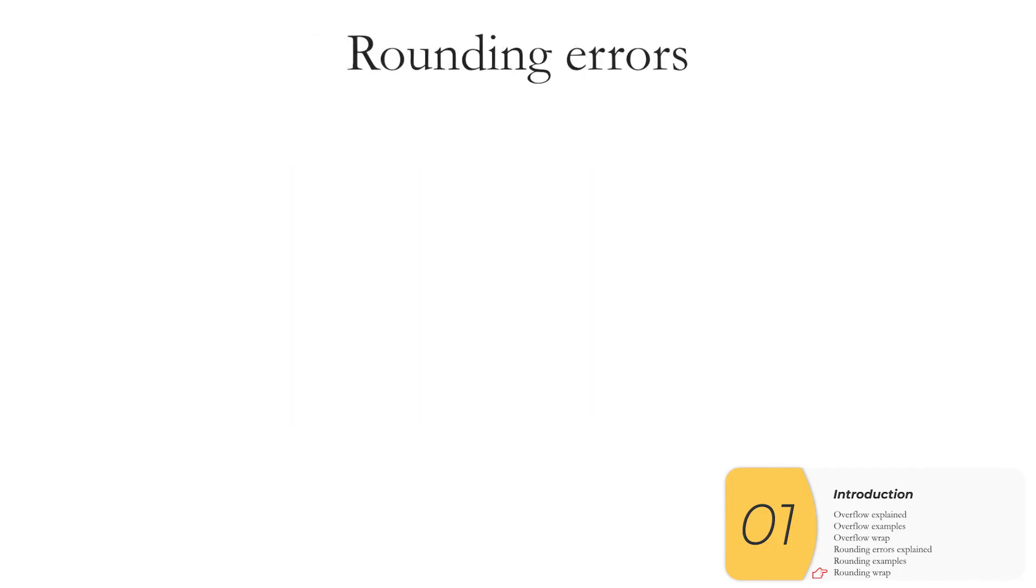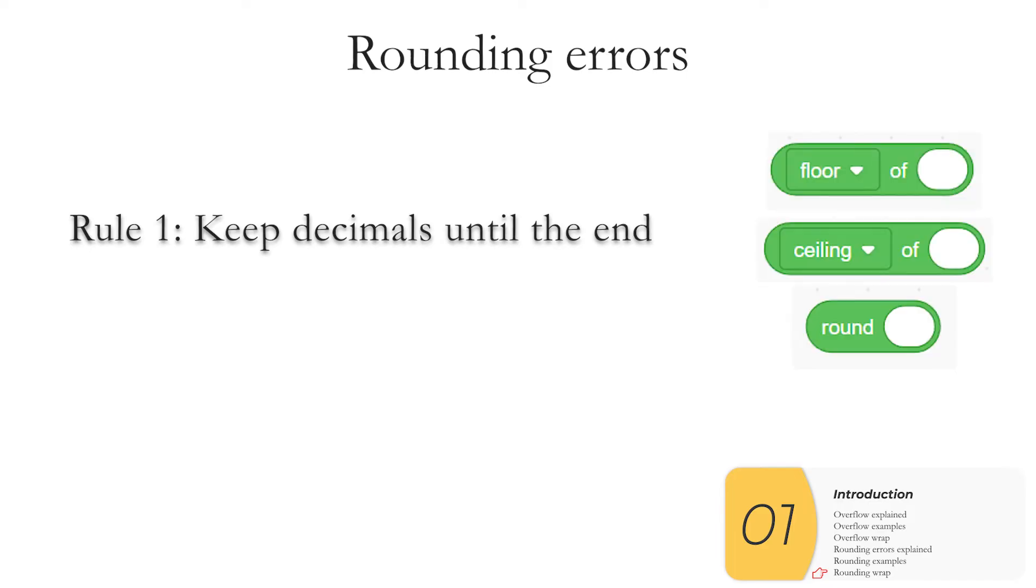Unlike overflow errors, rounding errors are things that will show up and will affect your code. There's a couple of things you want to do. The first is to make sure you keep all the decimals until the end. So these are from scratch, floor, ceiling, round. They appear pretty much in all languages. Don't use any of them until the end. Maybe at the end, you want to get rid of some extra decimal points. That's okay, but don't use them until the end.